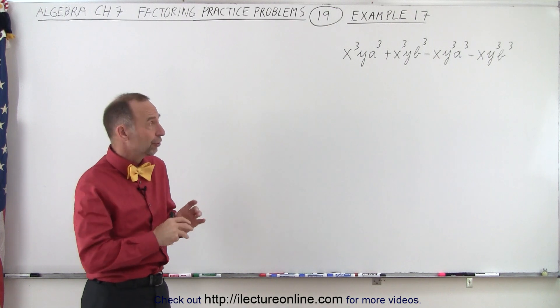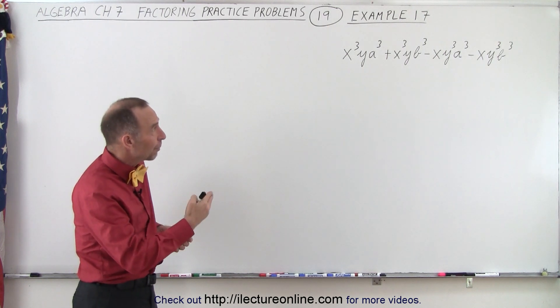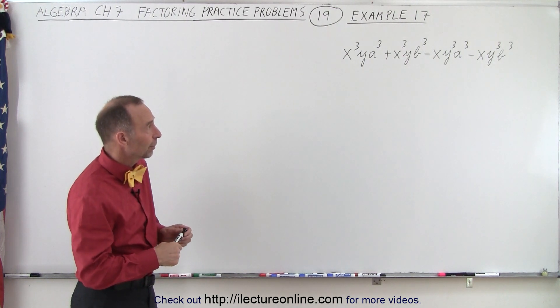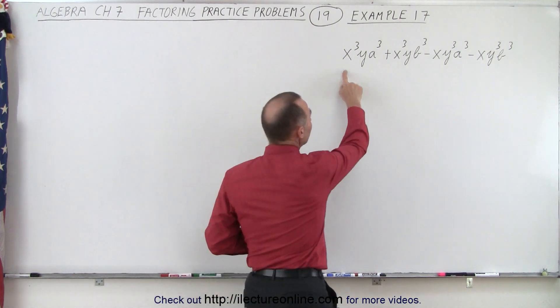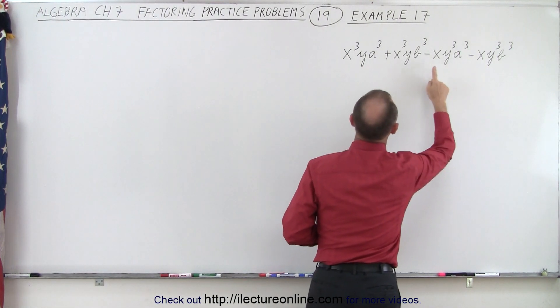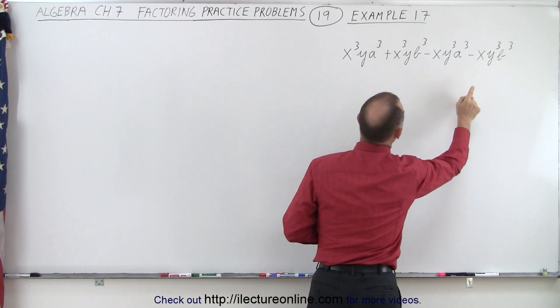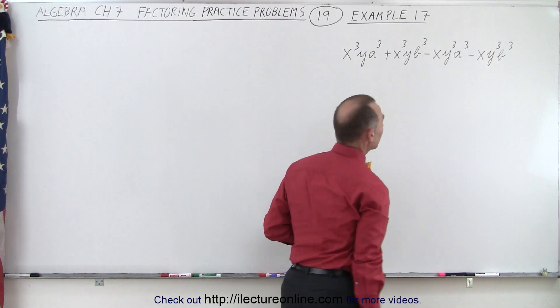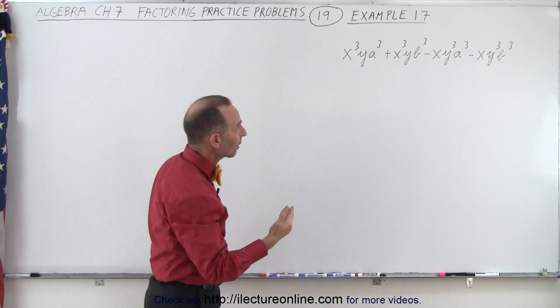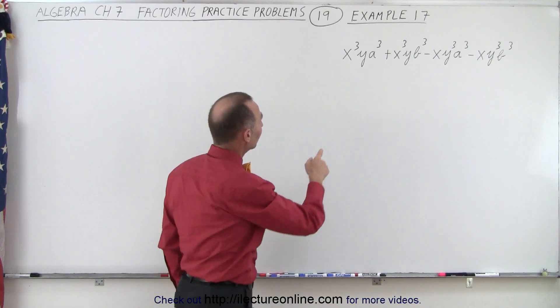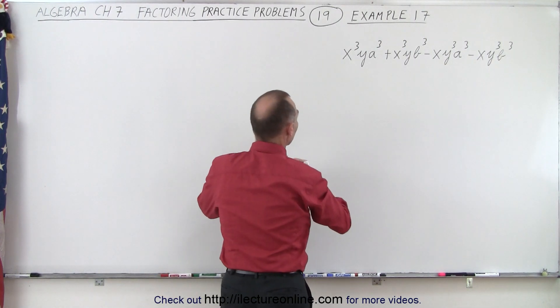There's four terms. First, what we should do is see if there's any common factors to make the problem a little bit easier. And notice every term contains an x. Every term contains a y. They don't all contain an a or a b. So at least we can factor out a single x and a single y. So let's do that to make it a little bit easier.